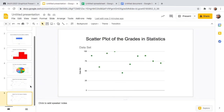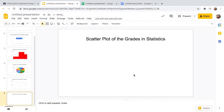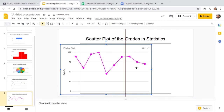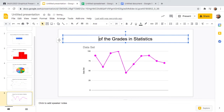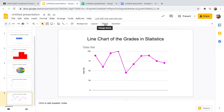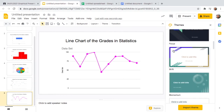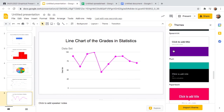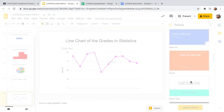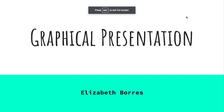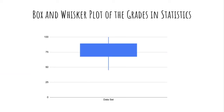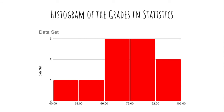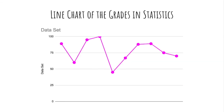Copy and paste the line chart into Google Slides and place it at the center. Title it 'Line Chart of the Grades of 10 Students.' If you want to change the theme or add a background, it's your choice. You can now present the full graphical presentation of the grades of 10 students in Statistics.